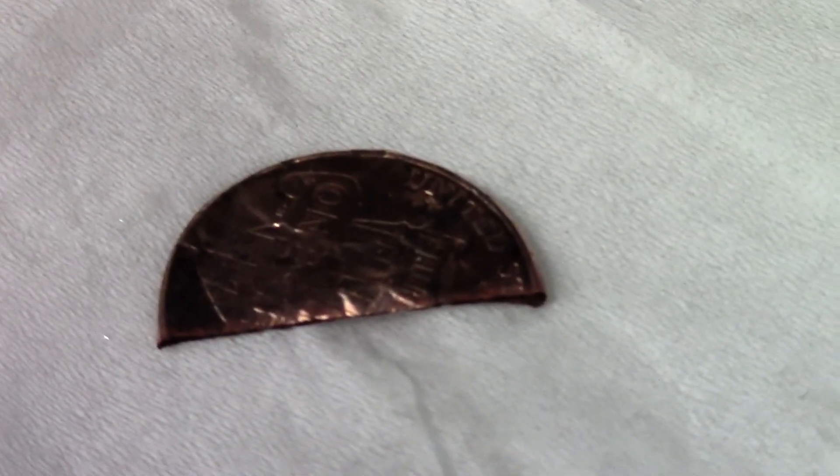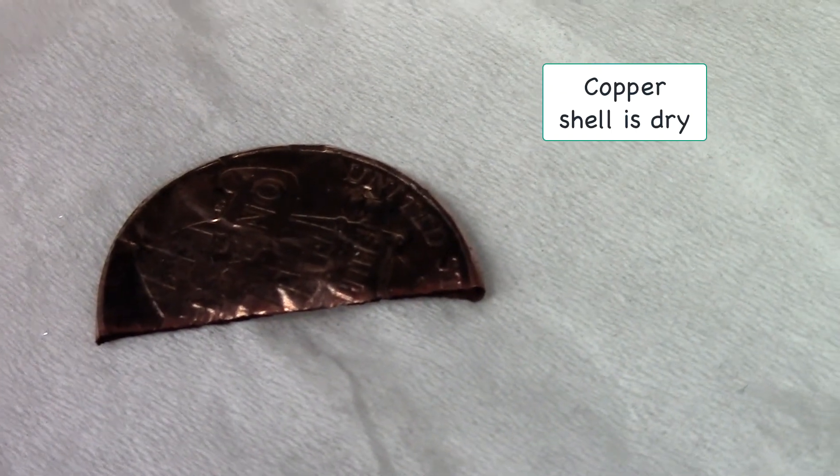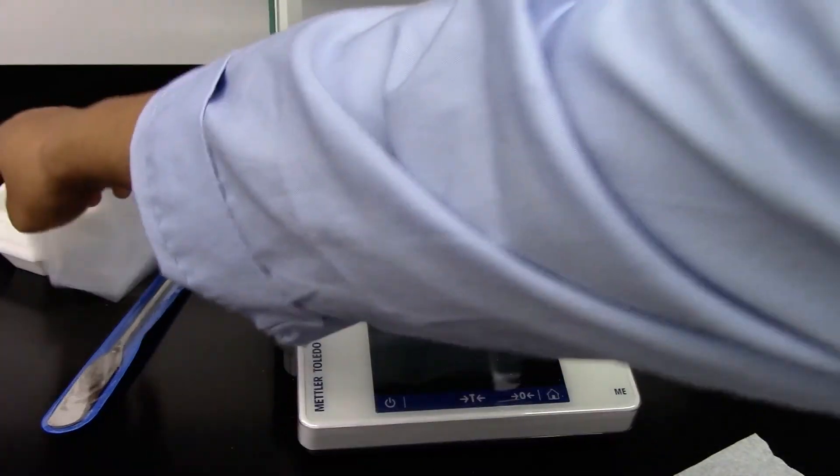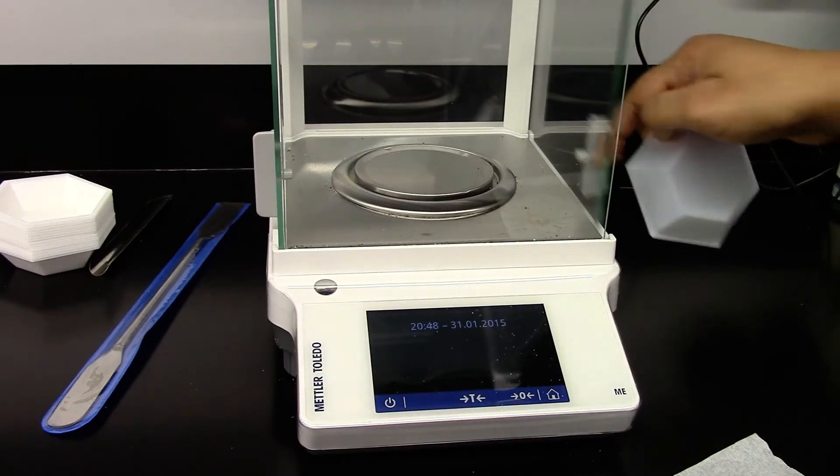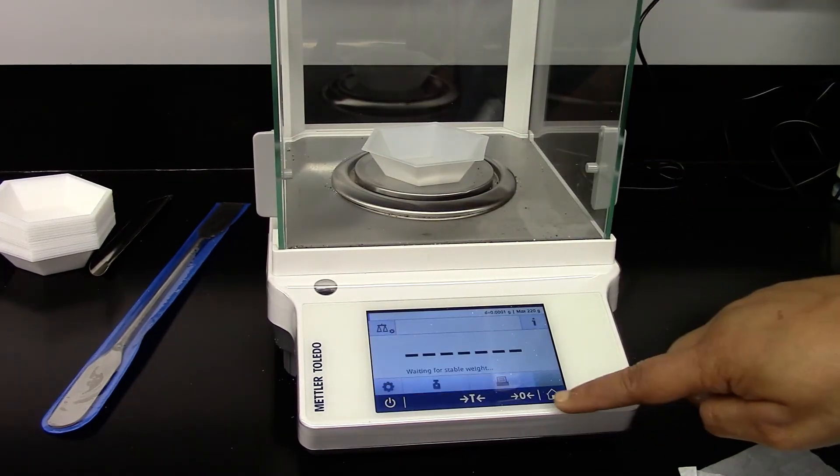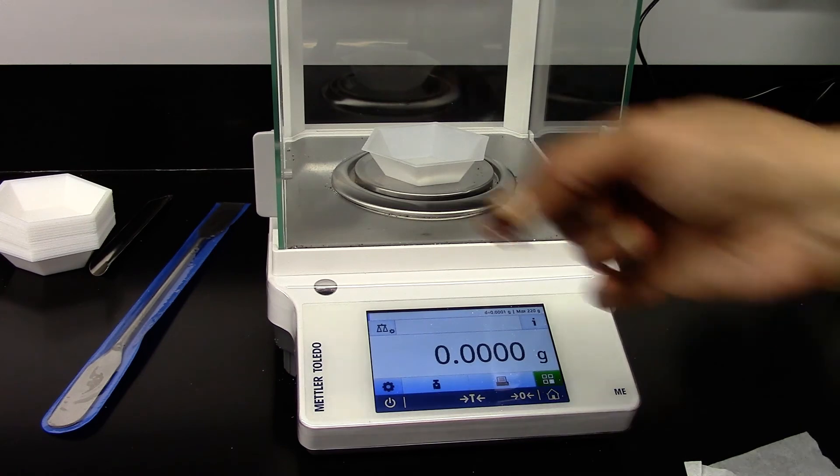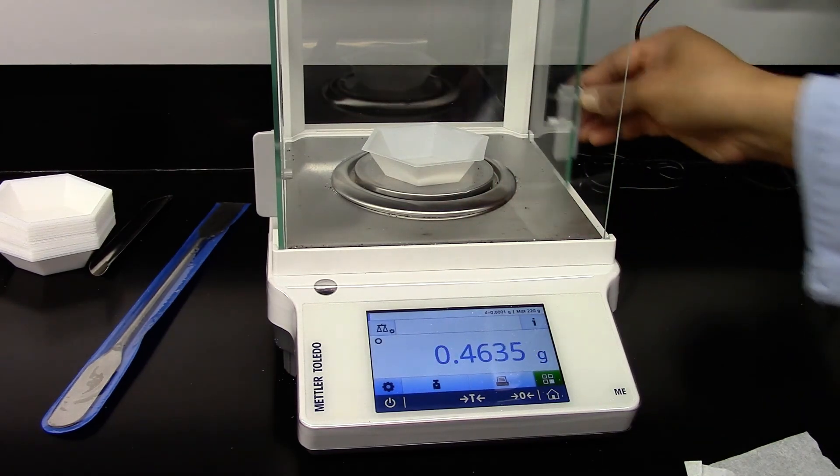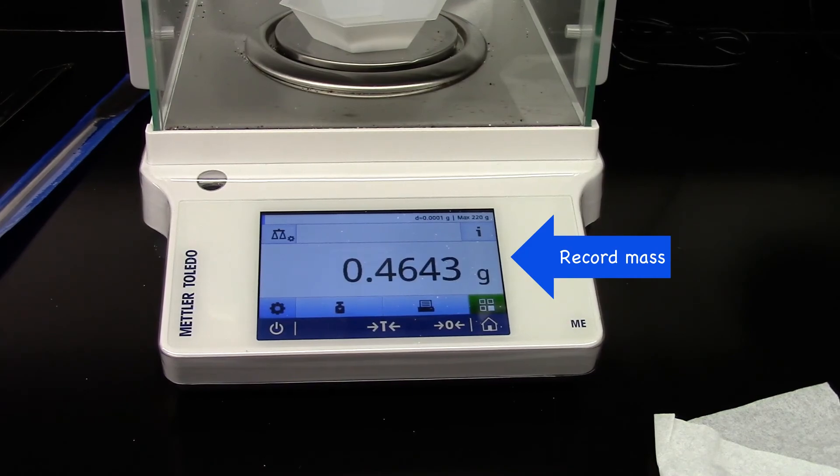I'm gently going to dab it dry. So my coin looks dry. I'm going to go ahead and weigh it out. I'm going to tare the weigh boat. Place the penny. So that's the mass.